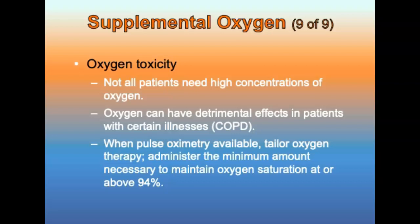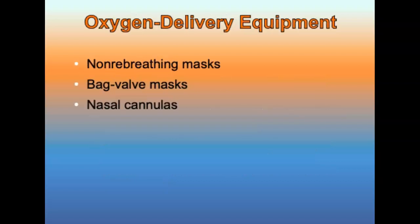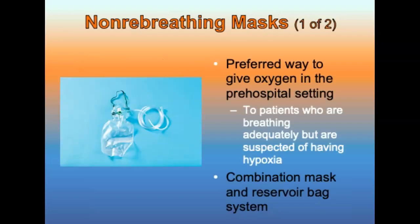Exceptions to these minimums include patients exposed to carbon monoxide. In general, oxygen delivery equipment in the field should be limited to non-rebreather mask, bag valve mask, and nasal cannula. The non-rebreather mask is the preferred way to give oxygen in the pre-hospital setting to patients who are breathing adequately but are suspected of or showing signs of hypoxia. It combines a mask with a reservoir bag system; oxygen fills the reservoir bag through a one-way valve, and exhaled gas escapes through flapper valve ports at the cheek areas.